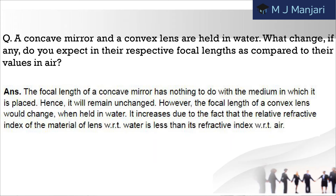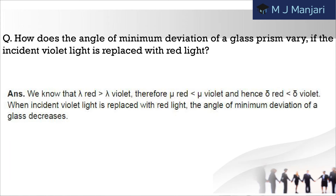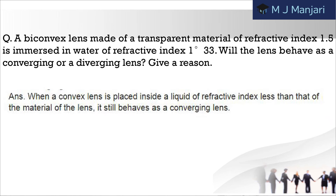Next: a concave mirror and a convex lens are held in water. What changes, if any, do you expect in their respective focal lengths as compared to their values in air? Next: a concave mirror of small aperture forms a sharper image. Why? How does the angle of minimum deviation of a glass prism vary if the incident violet light is replaced with red light? Next: a bi-convex lens made of a transparent material of refractive index 1.5 is immersed in water of refractive index 1.33. Will the lens behave as a converging or diverging lens? Give a reason.